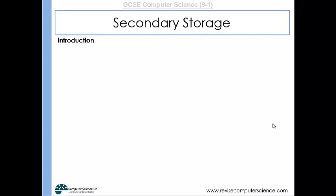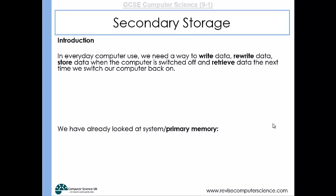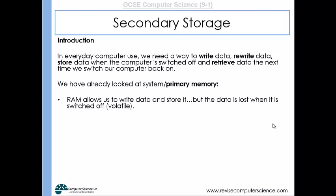Sometimes we want to have programs stored on our computer when the computer is switched off. We want our documents to be saved, our homework that we've been working on to be saved overnight when the computer is not running. If we were to solely rely on primary memory devices, we'd have issues because RAM is a volatile memory device — it needs electricity all the time to store data, and as soon as that electricity goes, the data is lost.